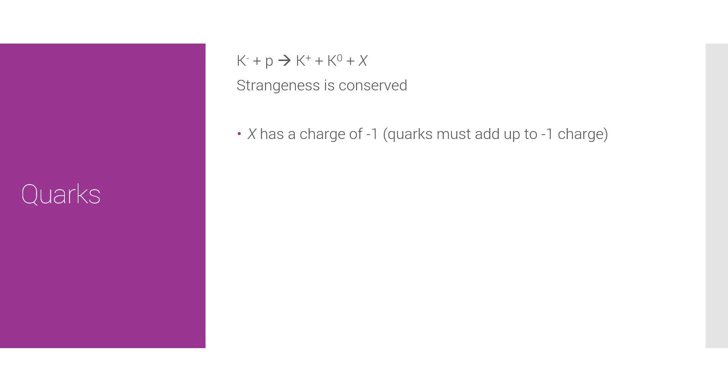Okay, let's deduce whether this is a baryon or a meson. We know it's not a lepton because we're told strangeness is conserved. So, is it a baryon or is it a meson? Well, the baryon number on the left side is one because a kaon isn't a baryon, but a proton is. So, we've got a baryon number of one on the left side and a baryon number of zero on the right side. So, X must be a baryon. And from this, we can deduce that there must be three quarks.